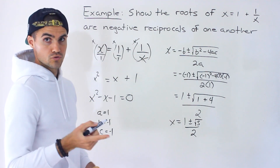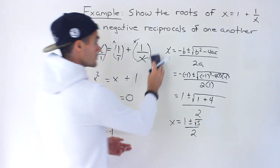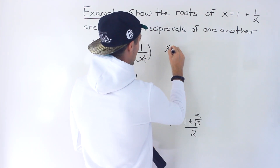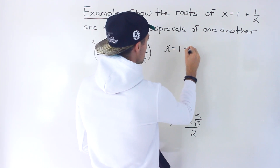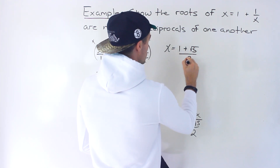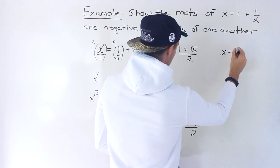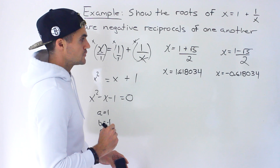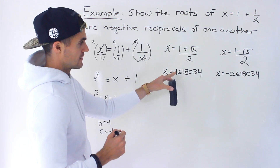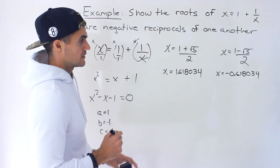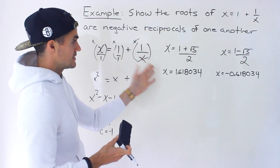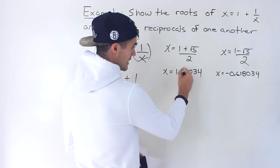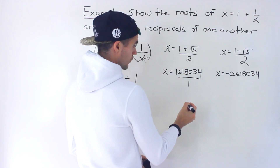Those are the two roots as exact values. So x equals 1 plus root 5 over 2, and the other solution is 1 minus root 5 over 2. If you get the corresponding decimals, you would get approximately 1.618034 and negative 0.618034.